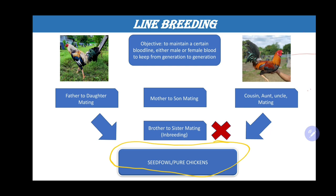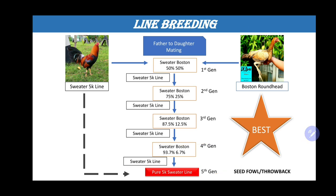Let me explain how you do line breeding in detail. I have this 5K Sweater line — this is one of my very good chickens. This rooster is my favorite. He won a lot of times, he's very strong. All his characteristics — the body configuration, the power, the fighting style, the history — it's very, very good and I want to maintain that bloodline.